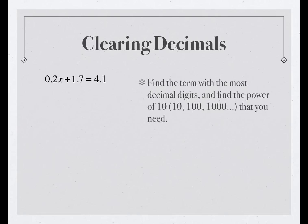The first step we're going to use is to find the term with the most decimal digits, in this case they all have one, and find the power of 10 that you need to clear those decimals. Multiply each term by the power of 10, simplify the numbers, and then solve.